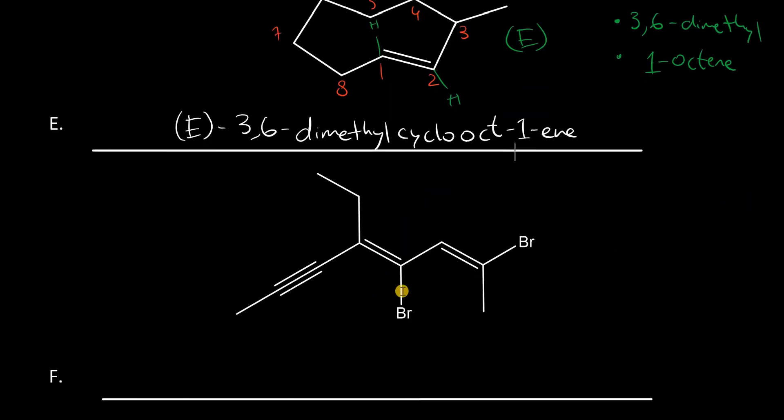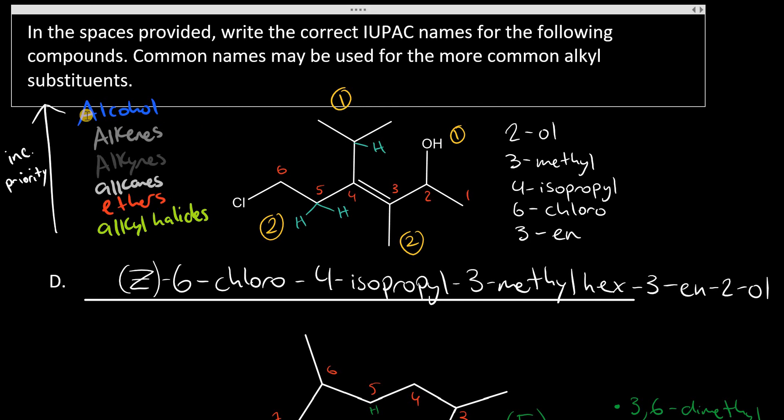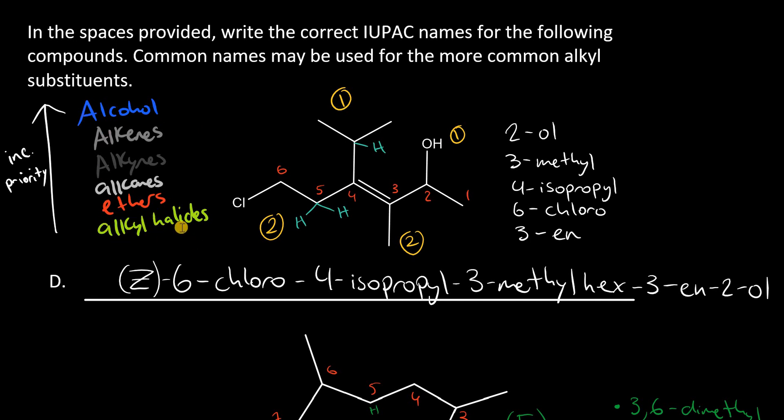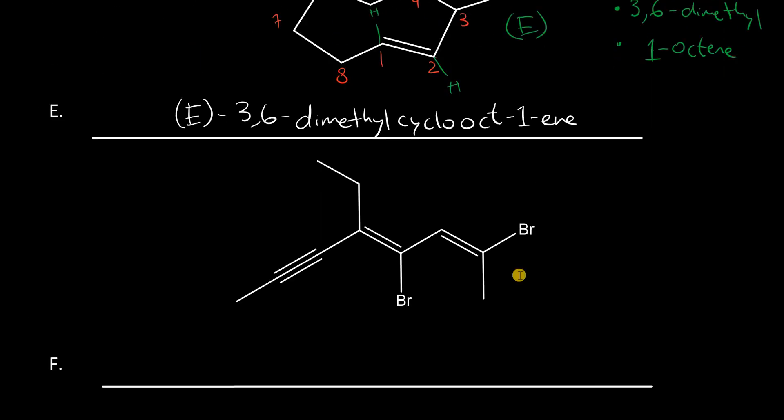This last example here conveys a very important point when naming compounds that are polyfunctional and have triple and double bonds. When we established prioritization here, we said that the alcohol was highest and alkyl halides was lowest. But, the more subtle point was that alkynes have lower priority than alkenes. We have two naming scenarios. I can start from the left here and name it this way. Or, I can start out here towards the right and name right to left. So, the blue nomenclature system is the one that's preferred.